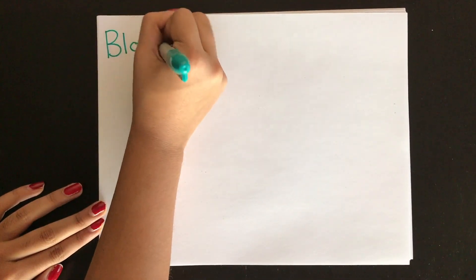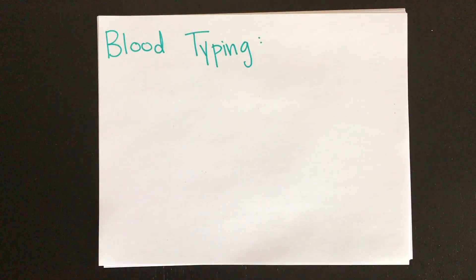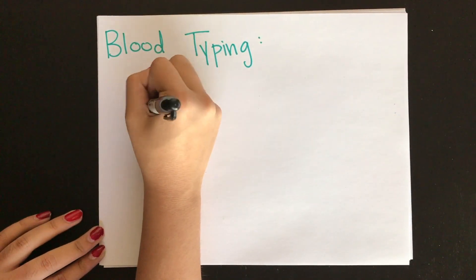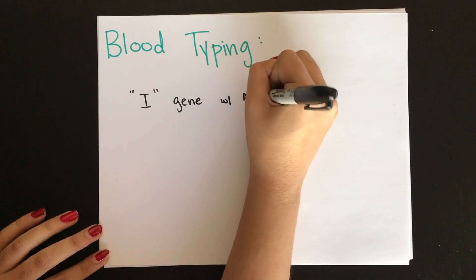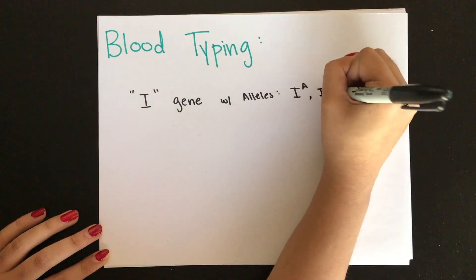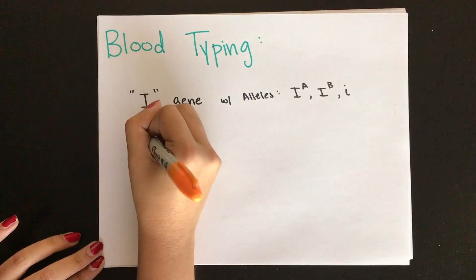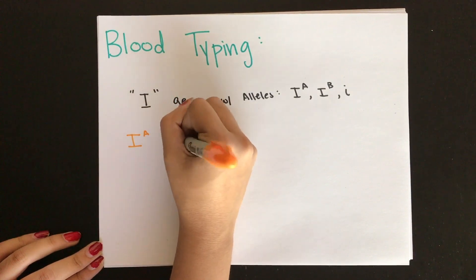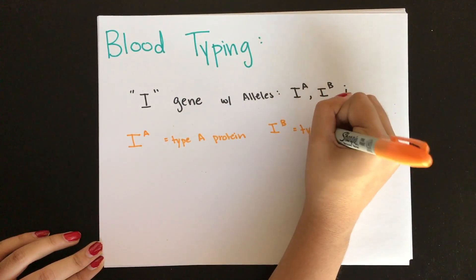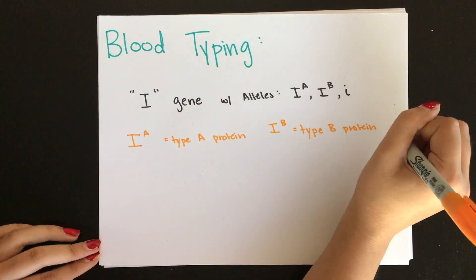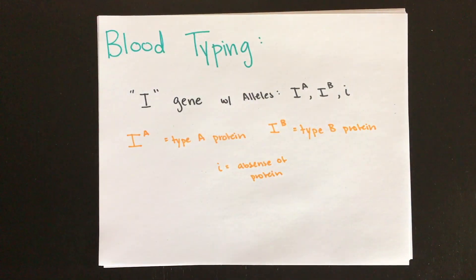Now we're going to talk about blood typing, which is a method to determine what proteins are expressed on the outside of your red blood cells. The easiest way to think about this is that there is an I gene with three different alleles: A, B, and lowercase i — or for our purposes, O. If somebody has an A allele, they have the type A protein on the surface of their red blood cells, and the same goes for B. But in the case of the lowercase i or O, it represents an absence of any proteins on the surface.